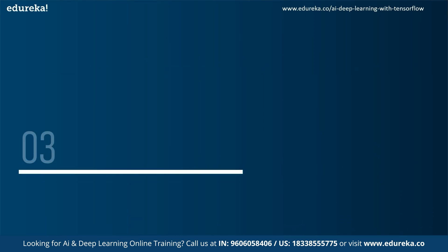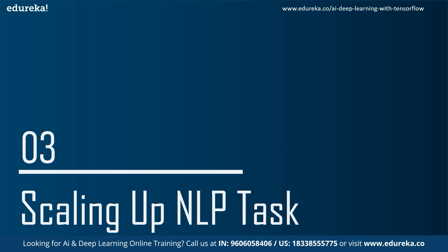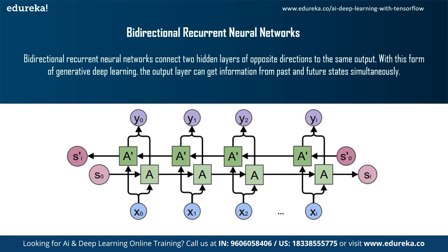To overcome this, we came up with upgrades to recurrent neural networks. Starting with Bidirectional Recurrent Neural Networks — these connect two hidden layers of opposite directions into the same output. With this form of generative deep learning, the output layer can get information from both past and future states simultaneously. Bidirectional RNNs duplicate the RNN processing chain so that input is processed both in forward and reverse time order, allowing the network to look into future context as well.